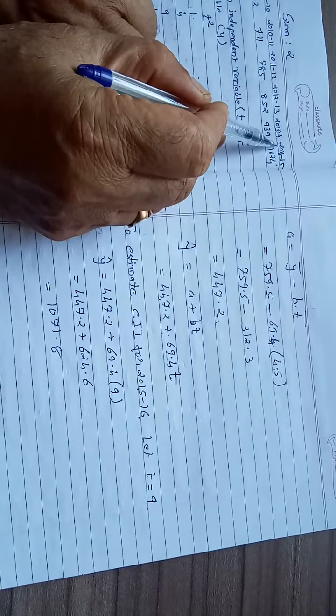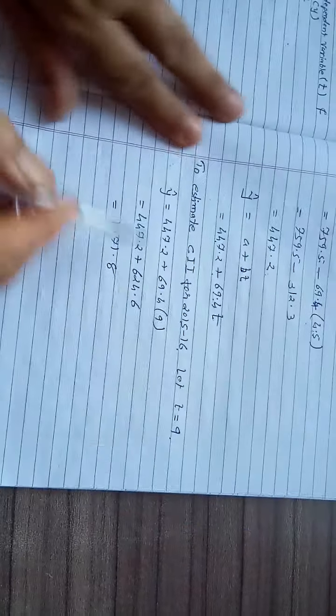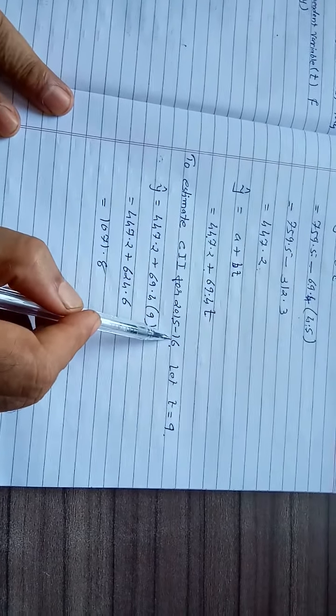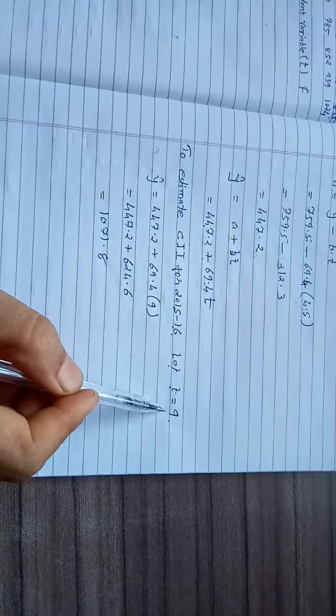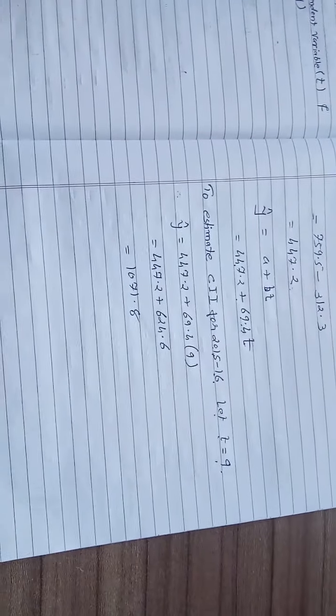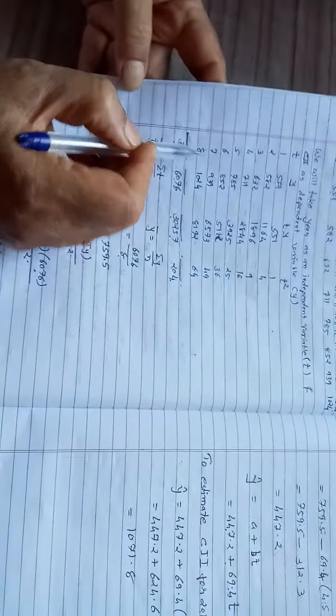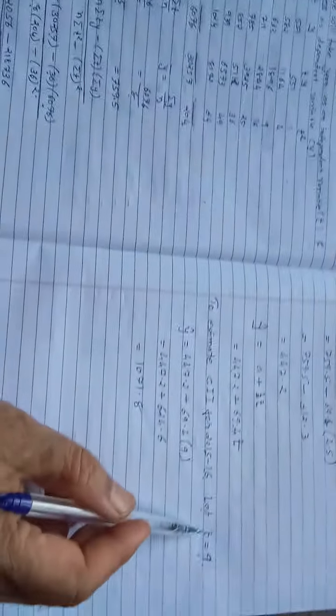According to the sum, we have to estimate CII for year 2015-16. In the data, the last year is 2014-15, so this is the next year, 2015-16. We will take t is equal to 9.